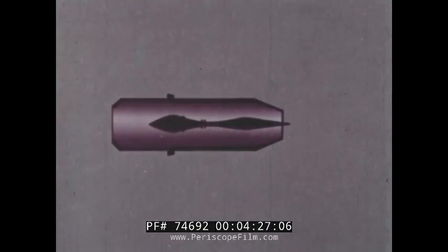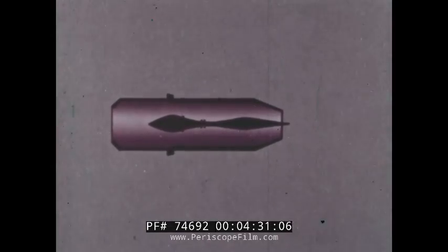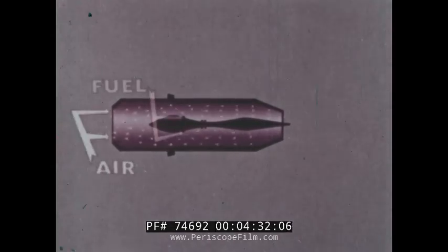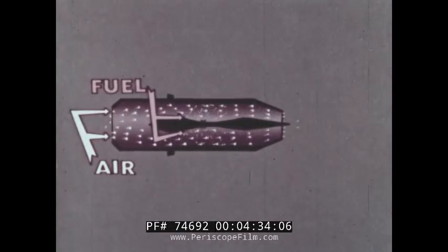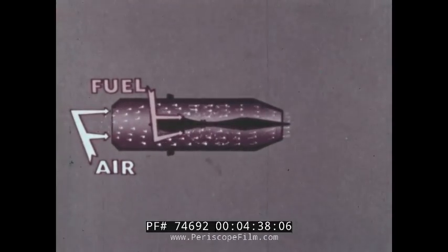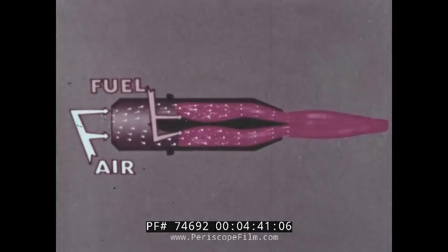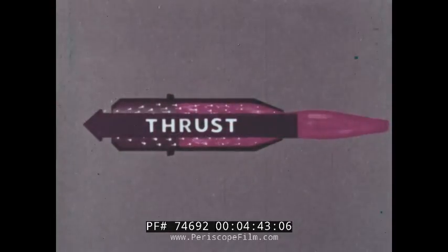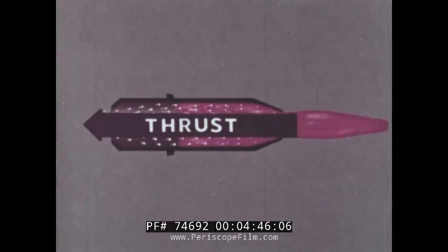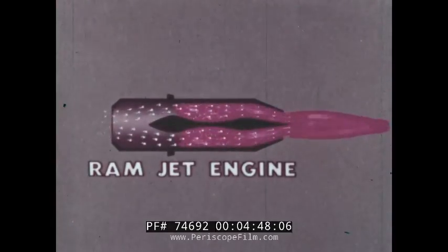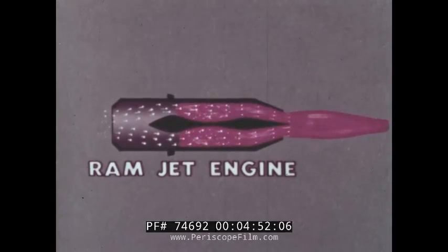Here we find the few essentials of the jet engine: fuel mixed with air to form a combustible mixture, ignition to start combustion, and a strong reaction thrust. This is a ramjet engine, so named because the engine must ram through the air at high speeds to bring in enough air for combustion.